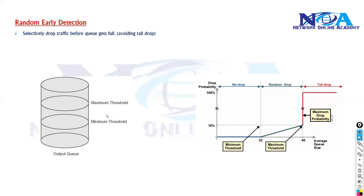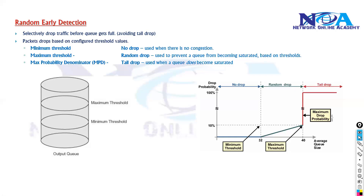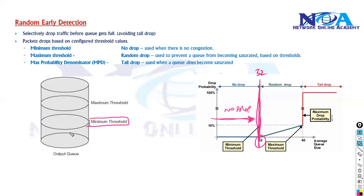Instead of doing tail drop, RED drops packets based on threshold values. There is a minimum threshold value — for example, let's say we configure 32 as the minimum threshold. As long as the queue size stays within 32, there will be no drops. Once it starts exceeding 32 — say we are now receiving 35 packets — it will start doing random drops.